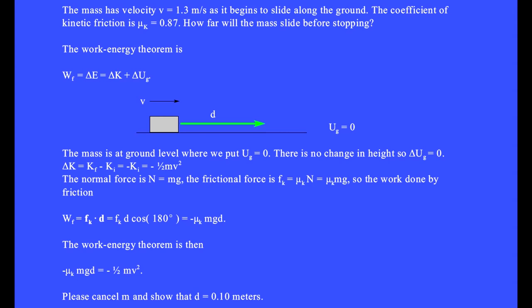The work-energy theorem states that the work done by friction equals the change in total mechanical energy of the mass, which equals its change in kinetic energy plus its change in stored gravitational potential energy.